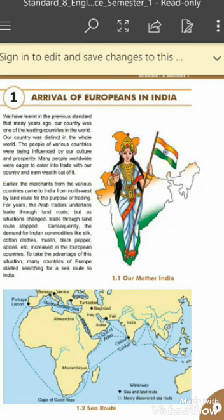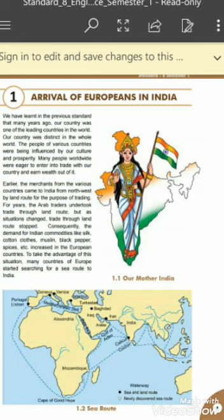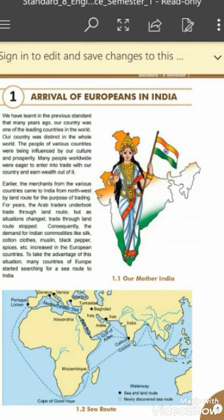Columbus started his journey to India but accidentally reached America. As long as he lived, he was under the misconception that he had discovered the sea route to India — it was his misunderstanding. Hence, even today the natives of America are called Red Indians, and the island group in the Caribbean Sea is known as West Indies.